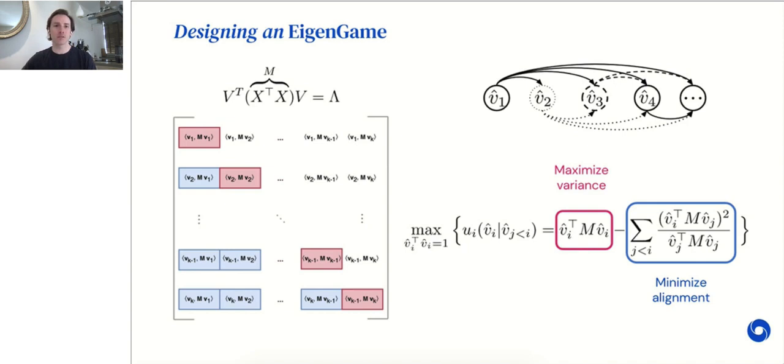This row-wise construction of utilities induces a hierarchy. For example, the first player is only encouraged to maximize variance as its row only contains a red term. In contrast, player K is encouraged to maximize variance, but also penalized for aligning with its K-1 parents. At runtime, each player must communicate its vector down the hierarchy so that its children may compute their utilities. One outcome of this construction is that these two terms are perfectly balanced. No coefficients or Lagrange multipliers are necessary, suggesting we have landed on a natural definition of the problem.